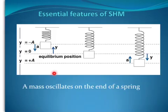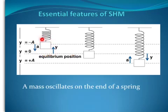Here we have an example of a mass on the end of a spring, moving up and down. This is the equilibrium position of the mass when it's not moving. In this first diagram, the mass is moving upward from the equilibrium position, so the displacement is upward. But the acceleration of the mass is directed downward, back towards the equilibrium position — opposite in direction.